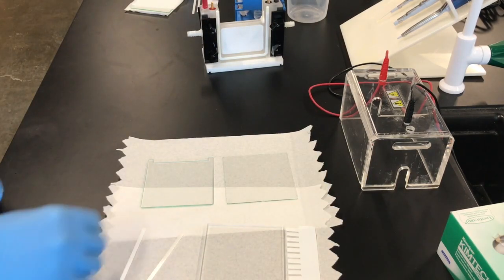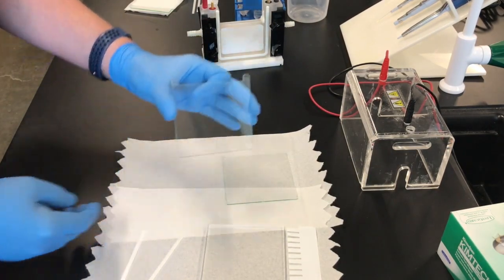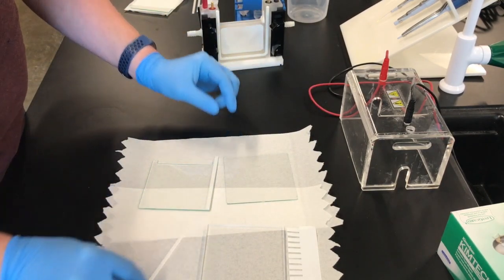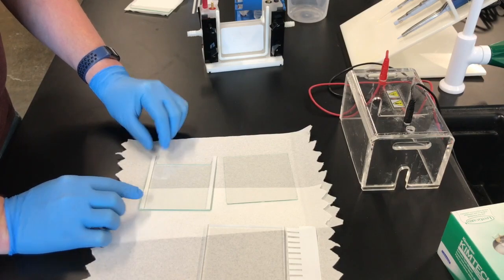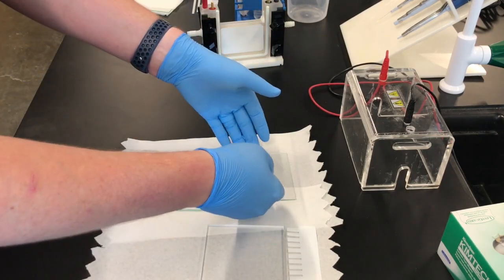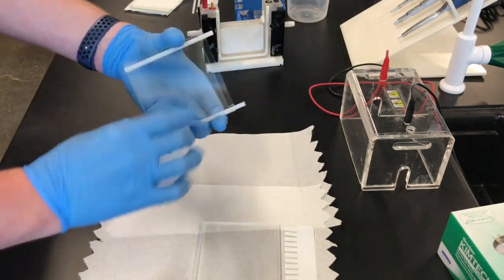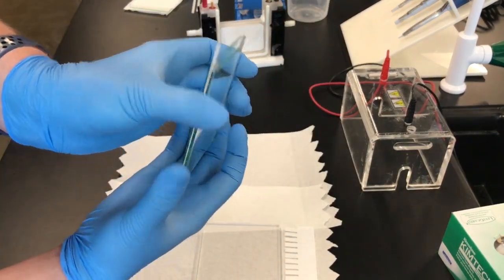Once the ethanol has dried, we'll take the plate with the notches on it and place the spacers to line up with the notches on both sides. Then take the square plate, flip it over, and place it on top so that we have a sandwich with the spacers in between the two glass plates.